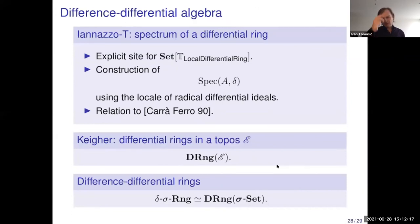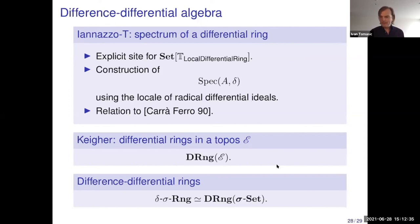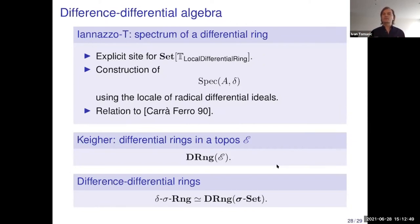I'd like to go back to Ritt: he not only envisaged the abstract formulation of difference algebra, but also of differential algebra, where the ring is given with a derivation. Of course, you can also mix the two structures and have difference-differential rings and modules — equipped with both a difference operator and a differential operator. With my PhD student Antonino, we describe the spectrum of a differential ring, starting by describing rather explicitly the classifying topos for the theory of local differential rings.